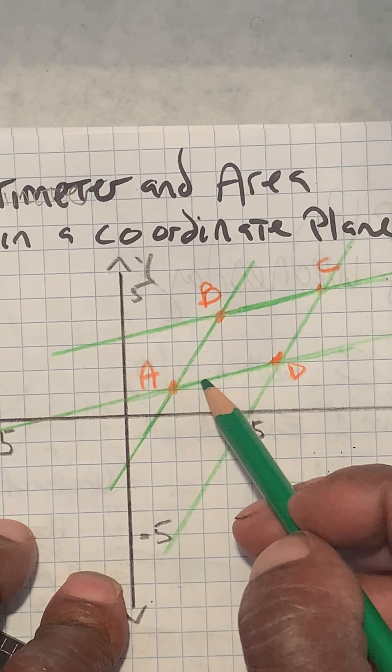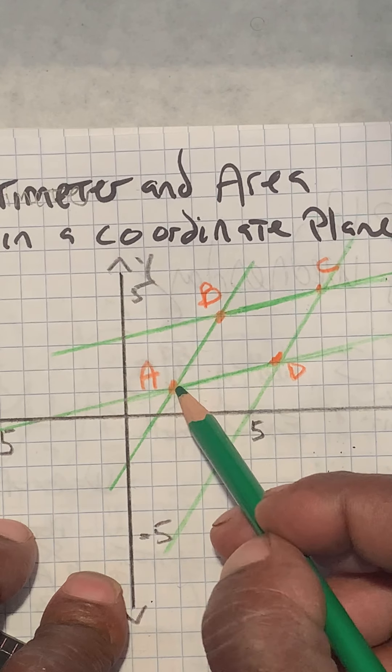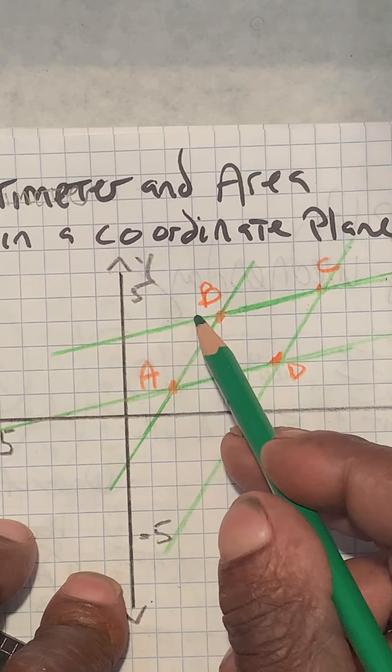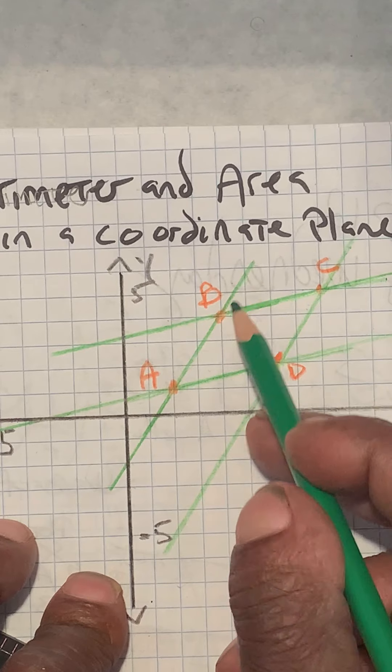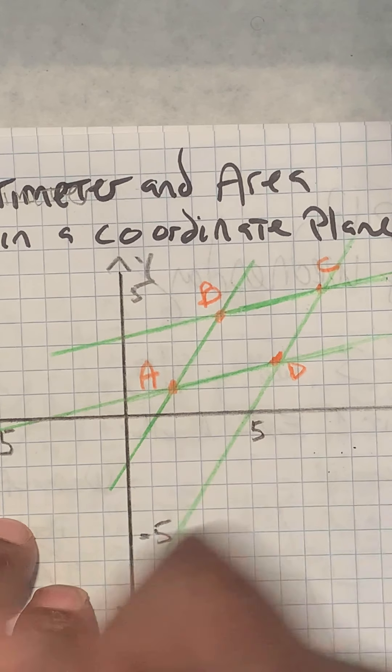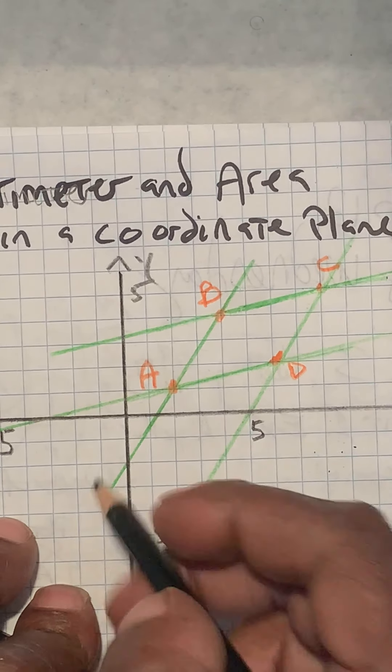What kind of polygon do we have? Well here I can see I'm going from here, going one, two, three up, and two to the right. So this line AB has a slope of three halves.